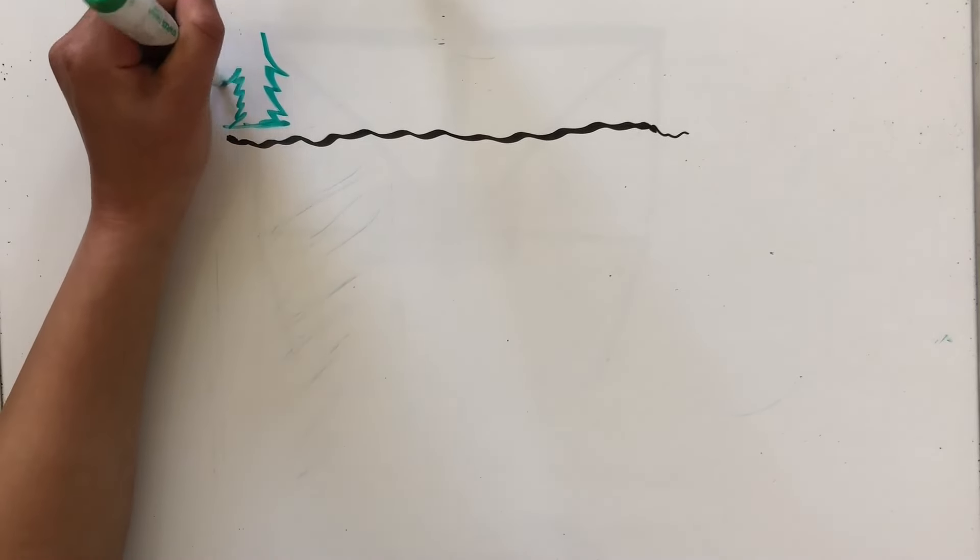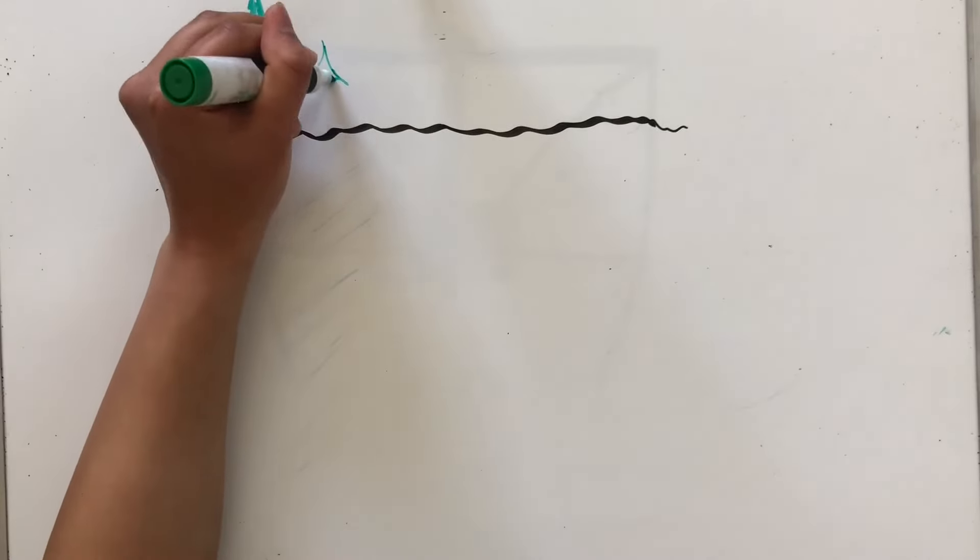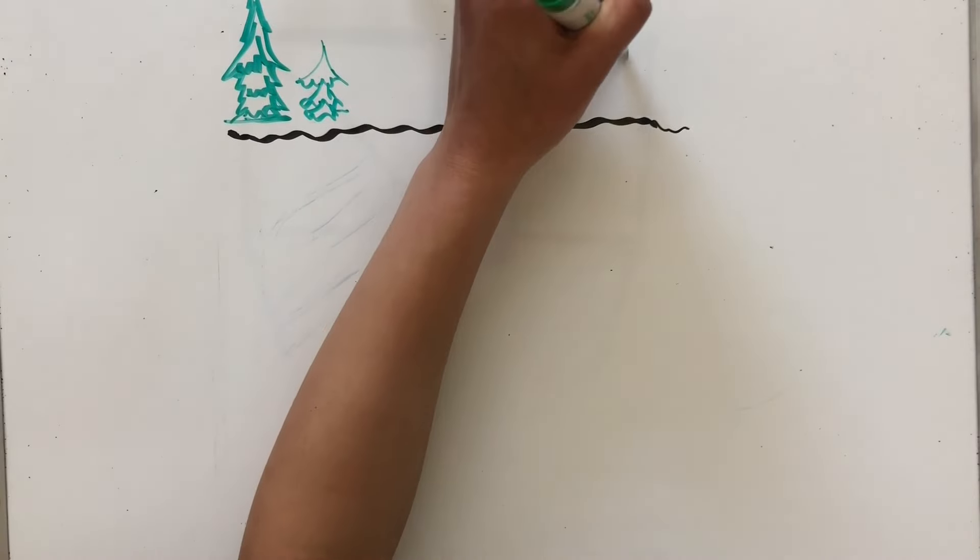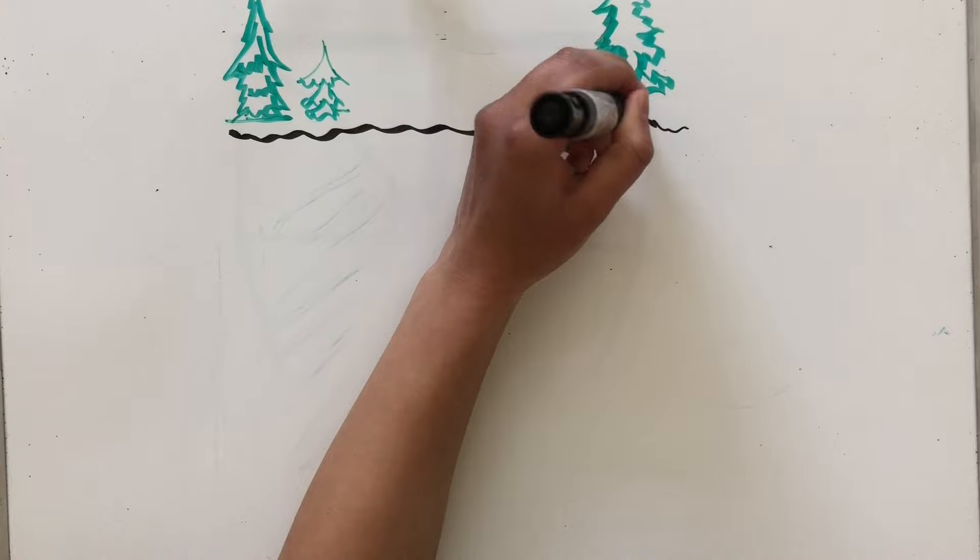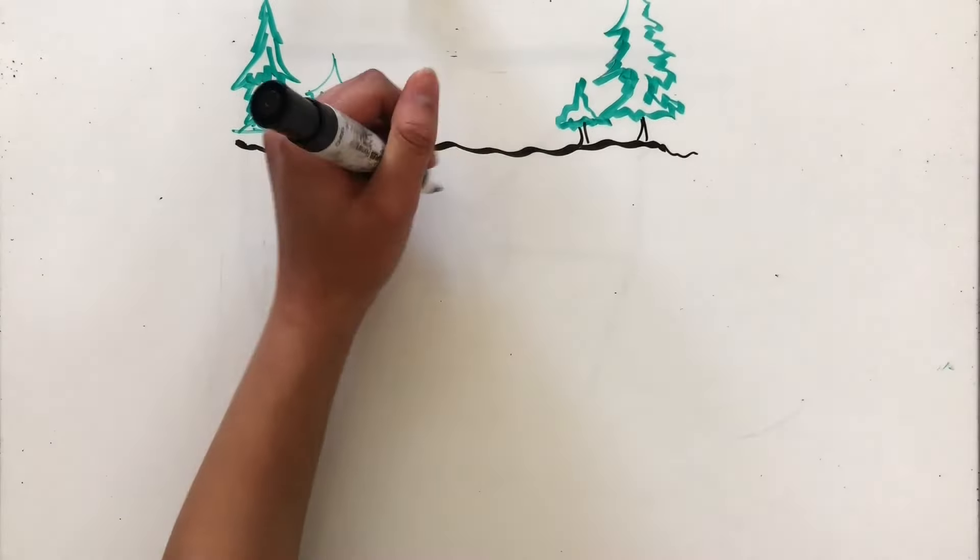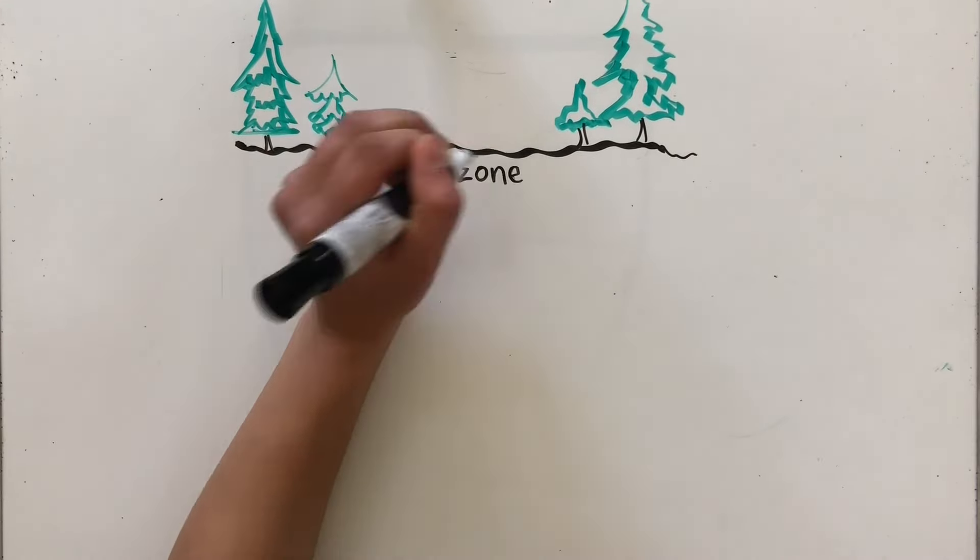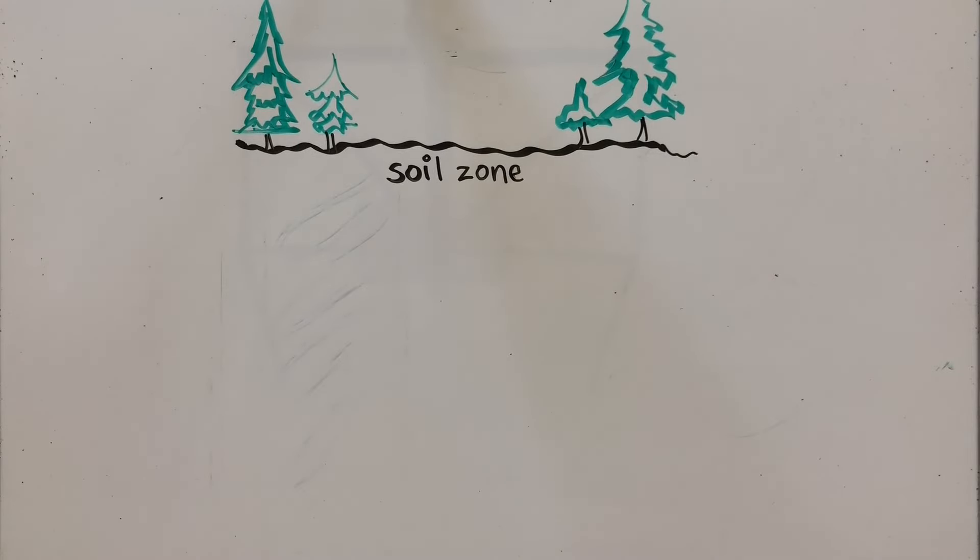But what is groundwater? Groundwater is water found in beds of rock and sand below the soil on Earth's surface. Think of it as rain that lands on the ground and soaks down through the soil and into rock material. This water moves slowly, and some of it eventually gets released through streams, rivers, lakes, and oceans.